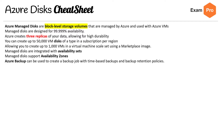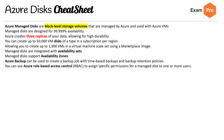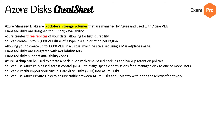Managed disks also support availability zones. Azure Backup can be used to create a backup job with time-based backups and backup retention policies. You can use role-based access controls to assign specific permissions for a managed disk to one or more users. You can directly import your virtual hard disk drives into Azure disks. You can also use Azure Private Links to ensure traffic between Azure disks and VMs stays within the Microsoft network.